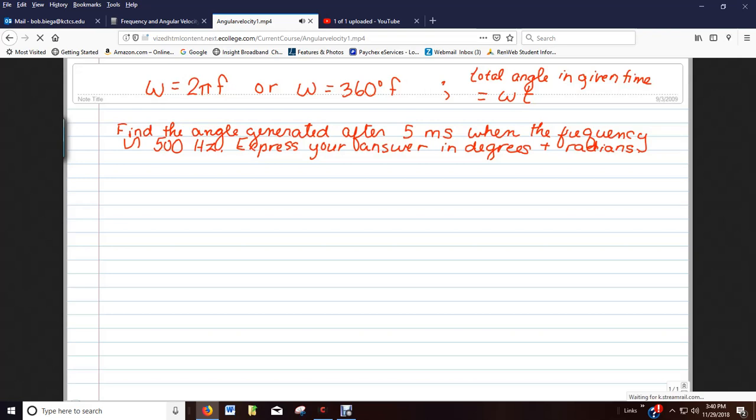All right, so let's look at the following problem. We want to find the angle generated after 5 milliseconds when the frequency is 500 hertz. We want to express our answer in both degrees and radians. So since we're going to express our answer in both degrees and radians, we're going to have to do two problems.